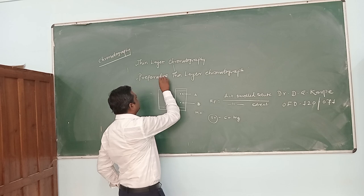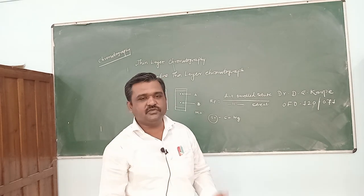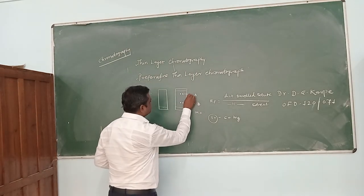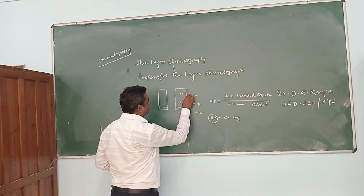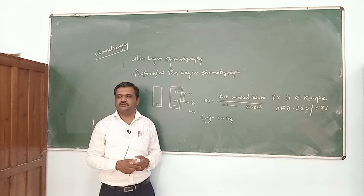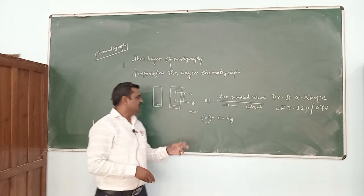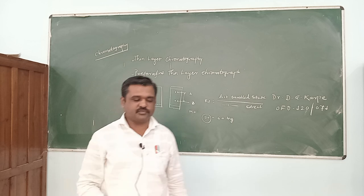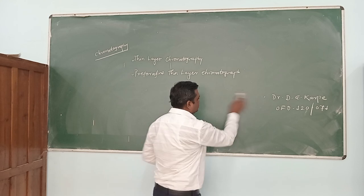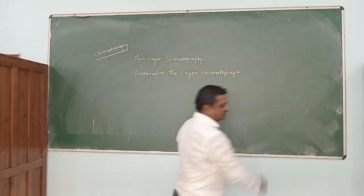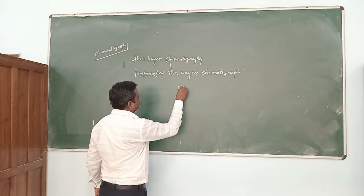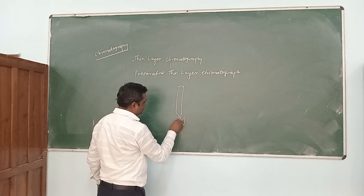Therefore, preparative thin layer chromatography gives approximately 90 to 100 percent pure components. If there is a sufficient difference in the RF values, they can be easily identified or separated from the mixture. This is a new technique used for the separation of components. Column chromatography is also a method for separation of components in a pure state — it is also a preparative technique where the sample is loaded on the column.